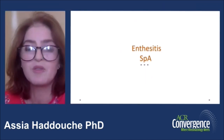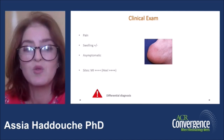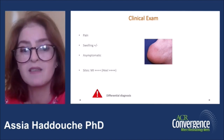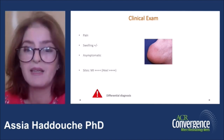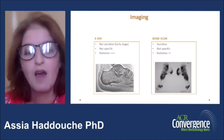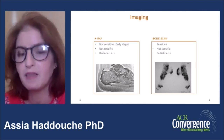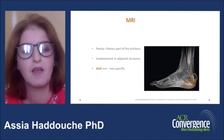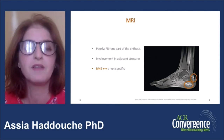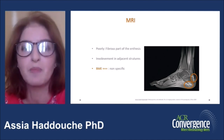Moving on to enthesitis and spondyloarthritis: on clinical exam it can cause pain, rarely swelling, and can also be asymptomatic. Common involved sites are the entheses of the lower limbs, mainly the Achilles tendon and the plantar aponeurosis. On imaging, X-rays and scintigraphy do not allow early diagnosis and are irradiating techniques. MRI can visualize the involvement of the insertion of the tendon and adjacent structures, notably the bone marrow edema, but it remains inaccessible and expensive.